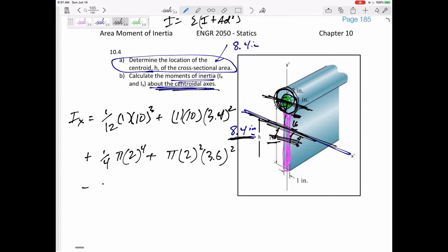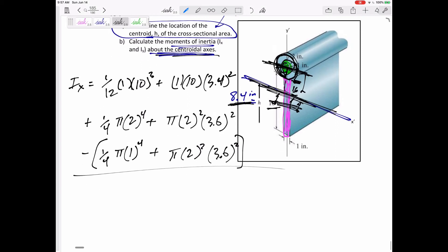All right, then I'm going to subtract out this middle circle. It is 1/4 pi. It's r to the 4th, and I need to move it actually the same 3.6 squared. AD squared. All right, so then I've got the IX. Just add those, subtract those. IX is 332.9 inches to the 4th.